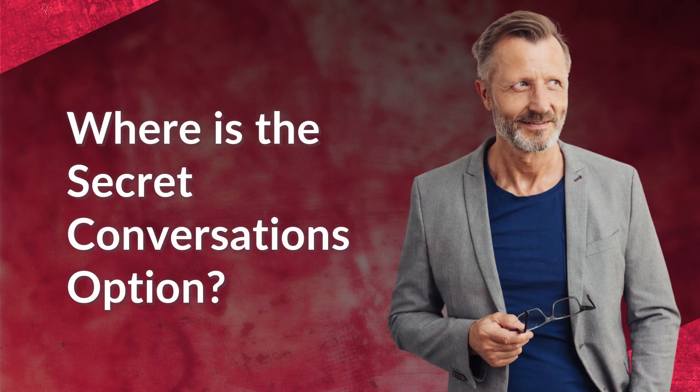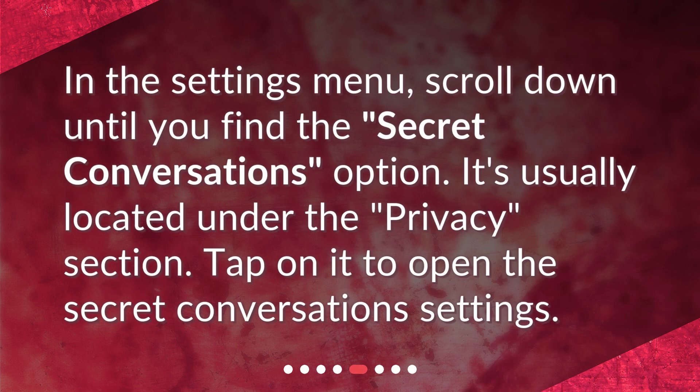Where is the Secret Conversations option? In the Settings menu, scroll down until you find the Secret Conversations option. It's usually located under the Privacy section. Tap on it to open the Secret Conversations settings.